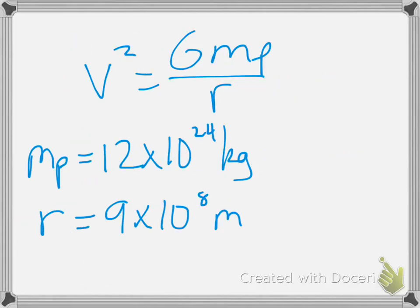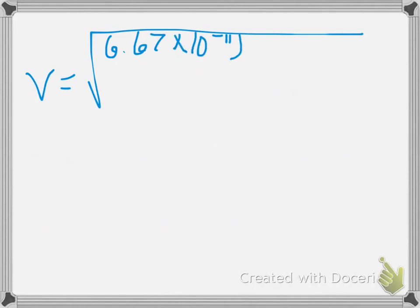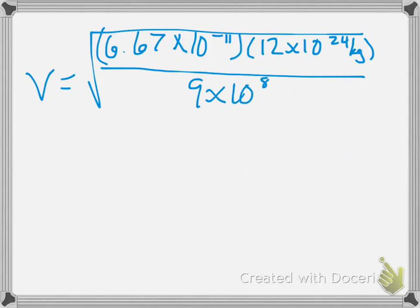Well, we know with this equation that we have to square root both sides in order for us to get a velocity out of this. So if we put everything together, that'll be the velocity is equal to the square root of big G, which we know is 6.67 times 10 to the negative 11th. Multiplied by the mass of the planet, 12 times 10 to the 24th kilograms. And we divide it all by 9 times 10 to the 8, and then you square root it.